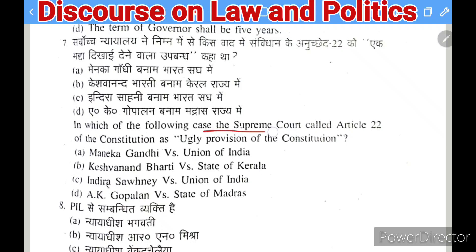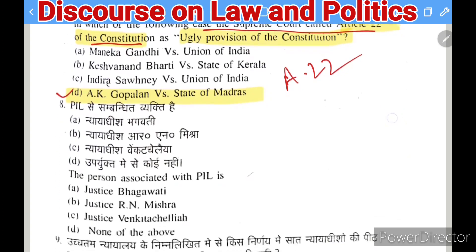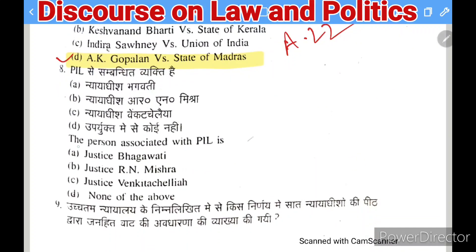Next question: in which case did the Supreme Court call Article 22 of the Constitution an 'ugly provision'? Options: Maneka Gandhi, Kesavananda Bharati, Indra Sawhney, or A.K. Gopalan. The correct answer is A.K. Gopalan — in this case dealing with Article 22, the court called it the 'ugly provision of the Constitution'.